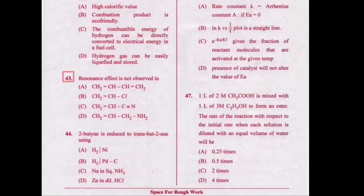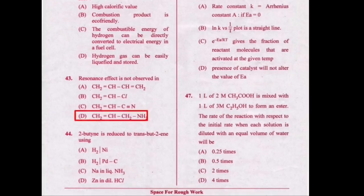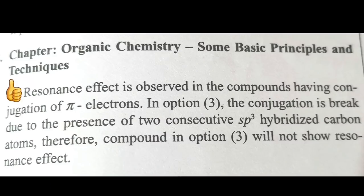In this question, the probability of the correct option being option A and option D — both are having a similar start. To decide the correct answer, we take the help of other options. Option C supports option D. Therefore our correct answer will be option D. If you're solving without tricks, imagine how much you have to do — you can verify your answer here.